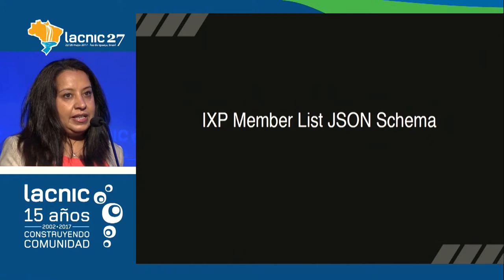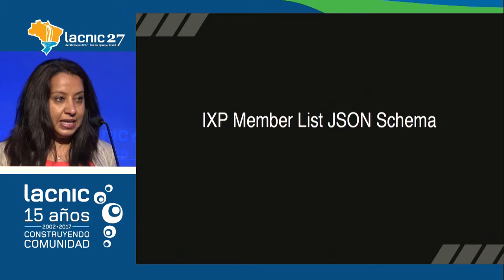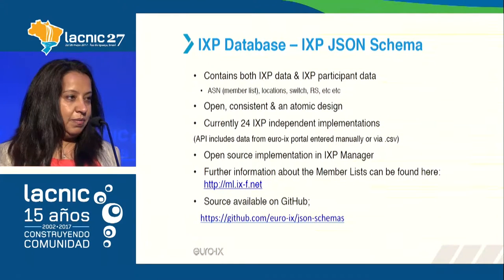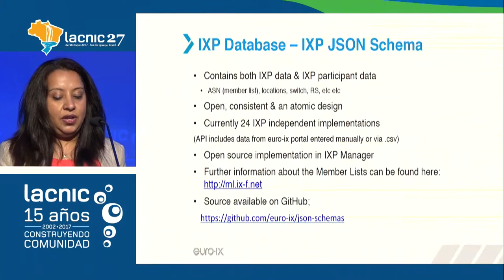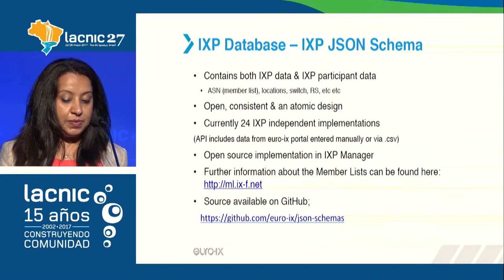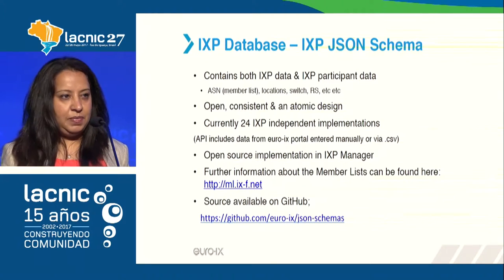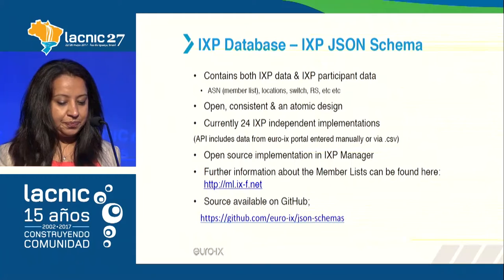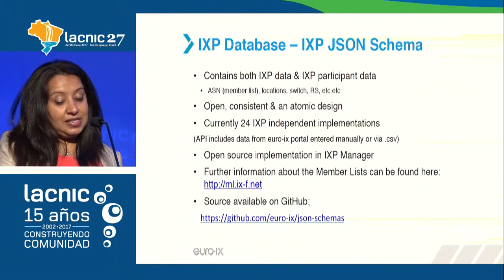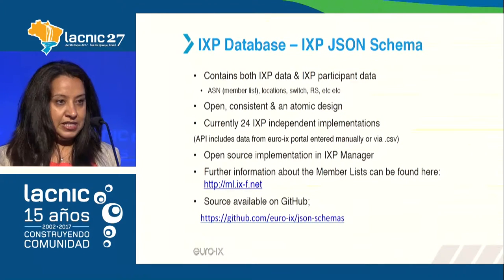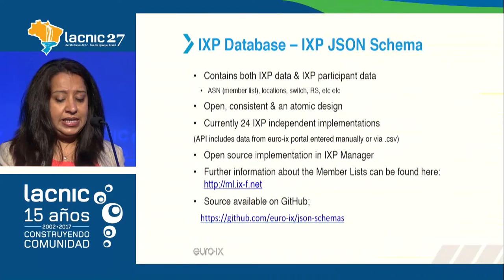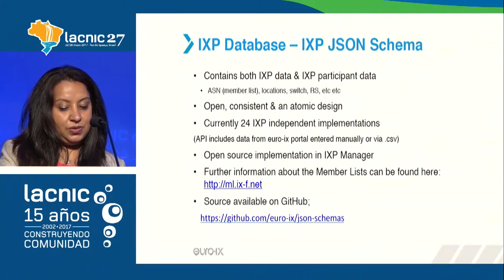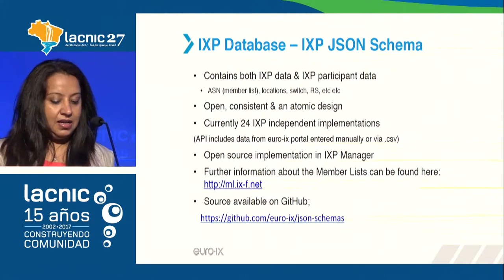From the IXP database, we've created an IXP member list JSON schema. It contains both IXP data and IXP participant data — for example, the ASN number, locations of the IXPs, switches used at the IXPs, route servers, and so on. Further development will add information about data centers where IXPs are present and also IP addressing. It's an open, consistent, and atomic design. There are currently 24 IXP independent implementations, and the API includes data from the URIX portal entered either manually or by CSV. There is also an open-source implementation in IXP Manager.